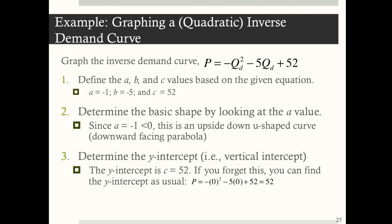Step 3: determine the y-intercept, the vertical intercept. The vertical intercept is always going to be c, which is 52. If you forget that, the y-intercept is just the value of y when x is 0. So in this case, substituting in 0 for quantity demanded gives you 52. So the first three steps are really straightforward.